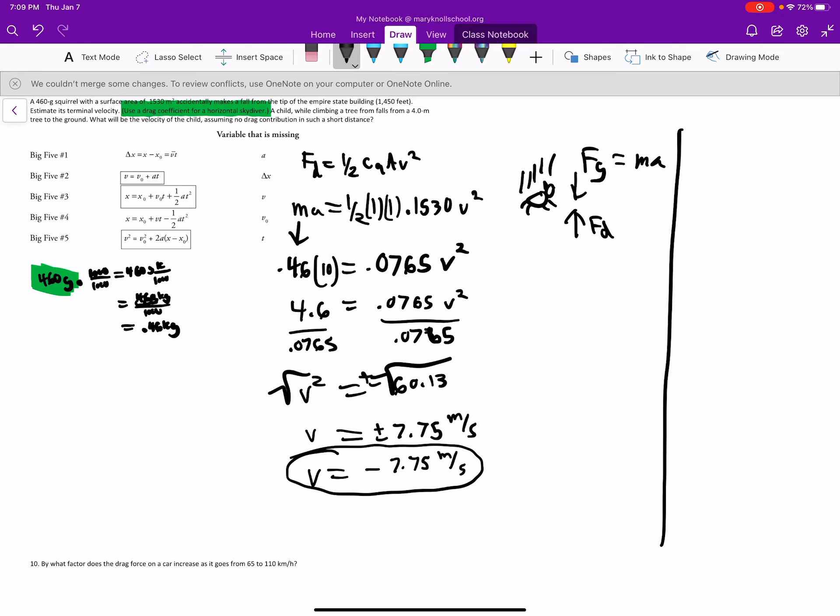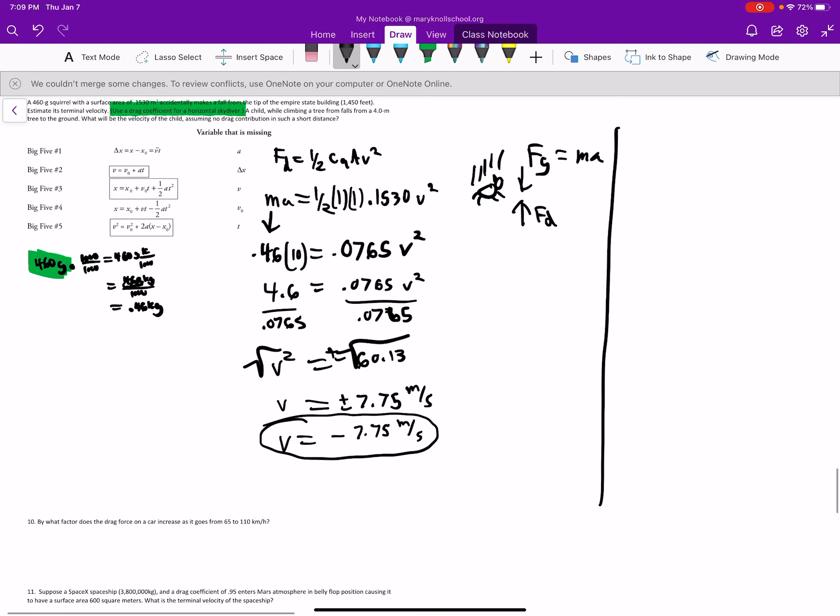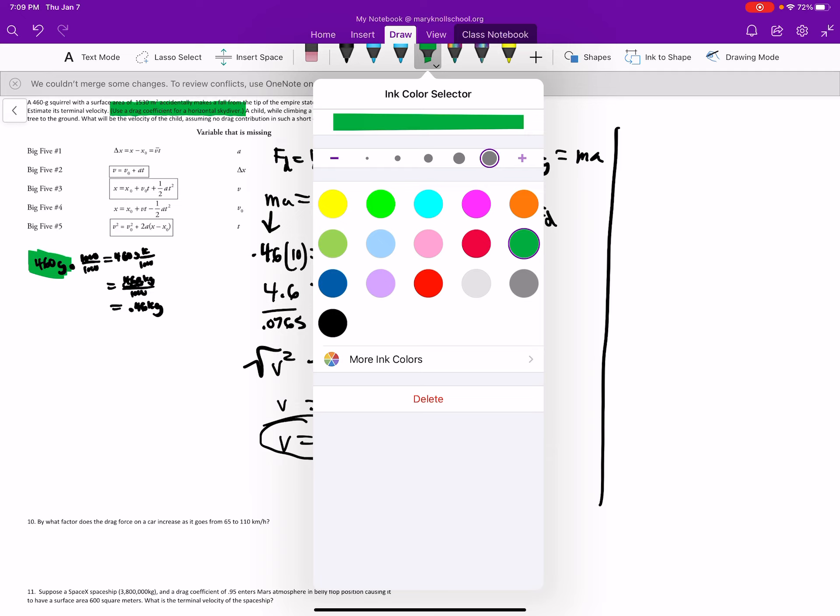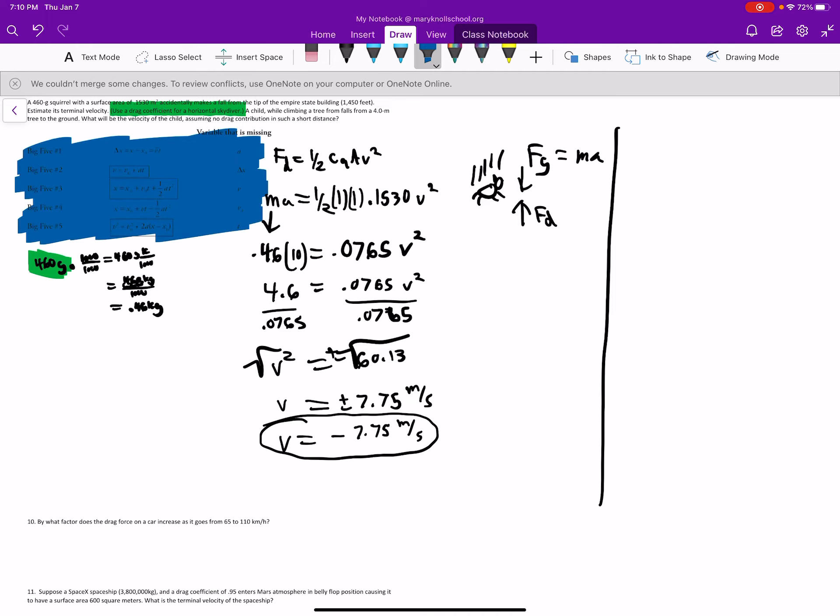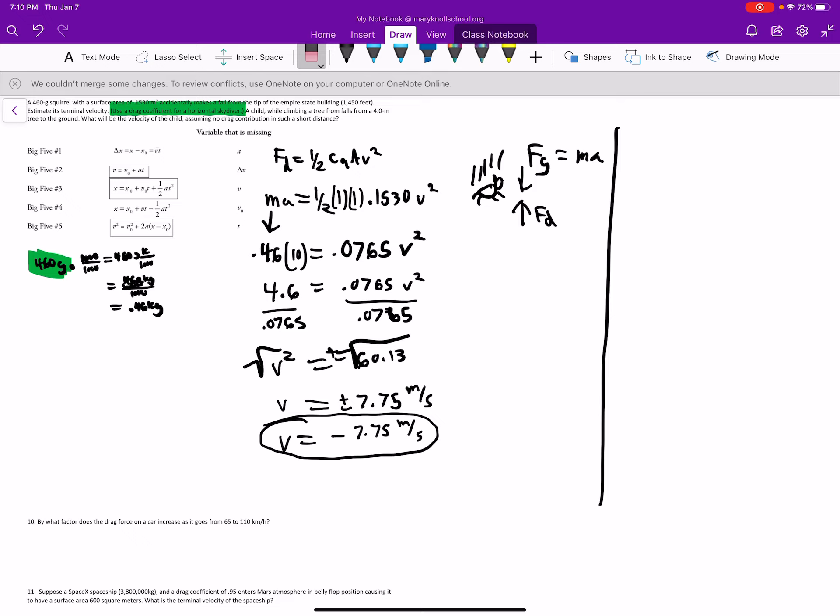Okay. So, jump out of four meter tree. How fast will you be going when you hit the ground? Well, we need to remember the kinematics equations. That's why we have these right here. Right here. So, which one do we need? That was always the question. That's always the question when we're doing kinematics equations.